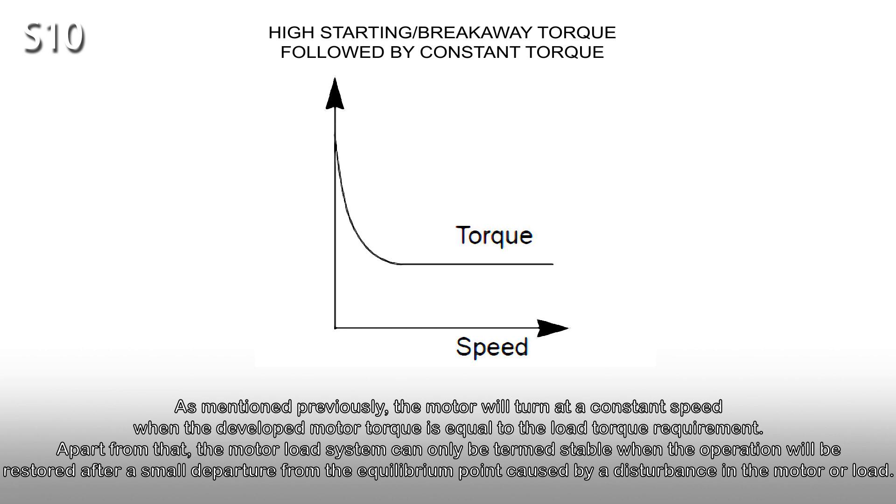As mentioned previously, the motor will turn at a constant speed when the developed motor torque is equal to the load torque requirement. Apart from that, the motor load system can only be termed stable when the operation will be restored after a small departure from the equilibrium point caused by a disturbance in the motor or load.